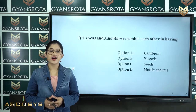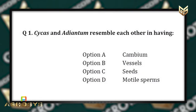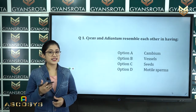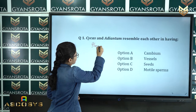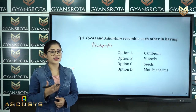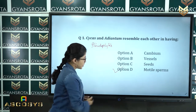Hello dear students. In today's session I will be solving the NEET question paper of the year 2012. The first question asks: Cycas and Adiantum resemble each other in having — option A cambium, option B vessels, option C seeds, option D motile sperms. This is from the chapter Plant Kingdom. These two species are pteridophytes, and they resemble each other in having motile sperms. Option D is the correct answer.